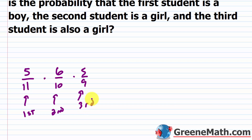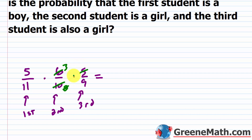So the probability of picking a boy first, then a girl, then a girl is five over eleven times six over ten times five over nine. Before multiplying, you can cancel: six and ten share a factor of two giving three and five, and nine divided by three is three. This gives five times one, or five, over eleven times three, which is 33. So the final probability is five over 33.